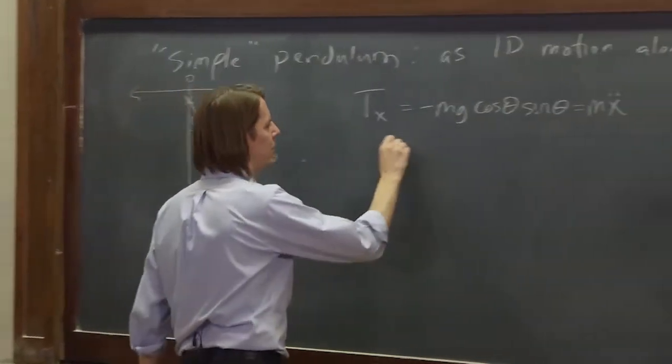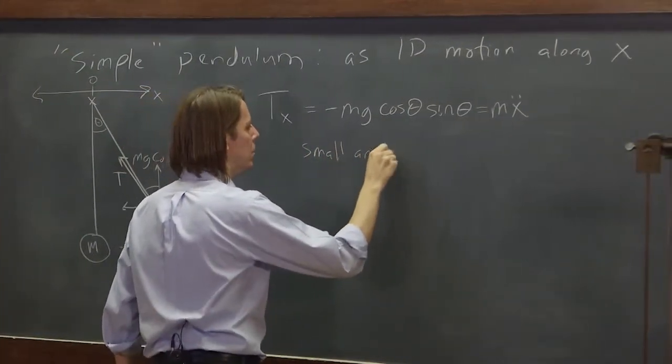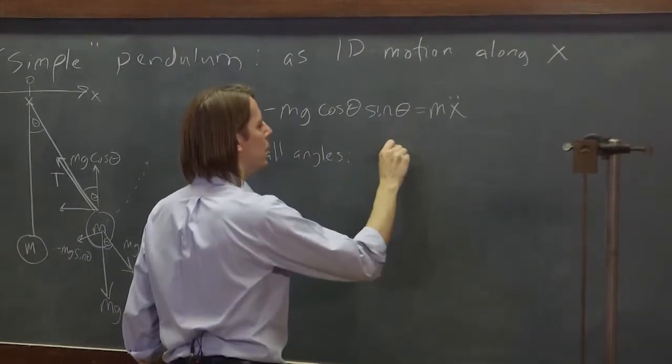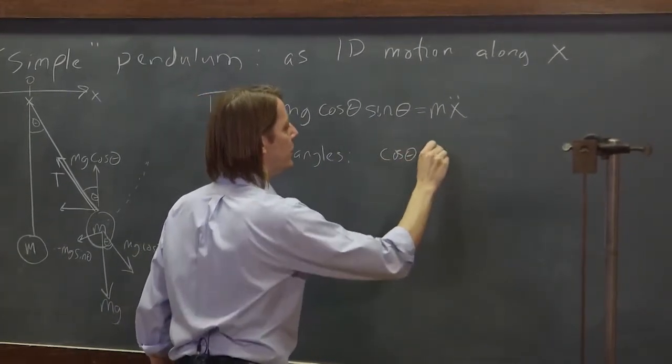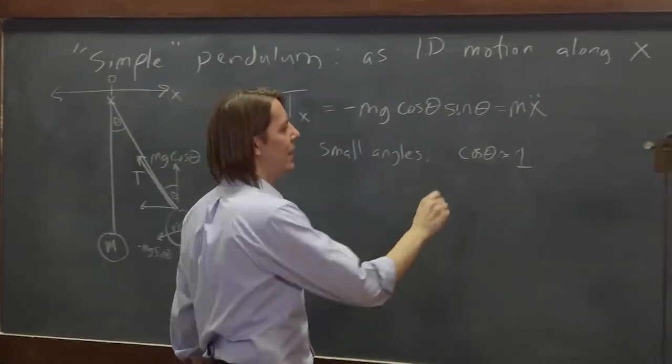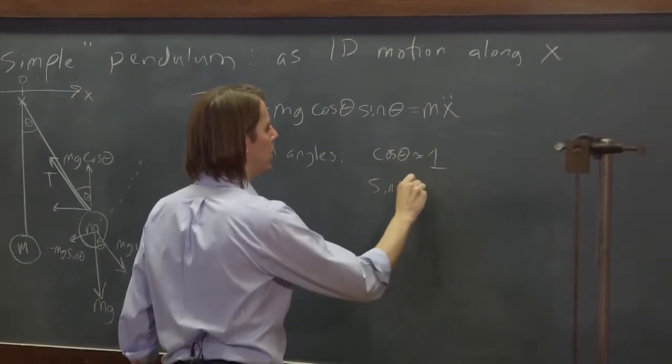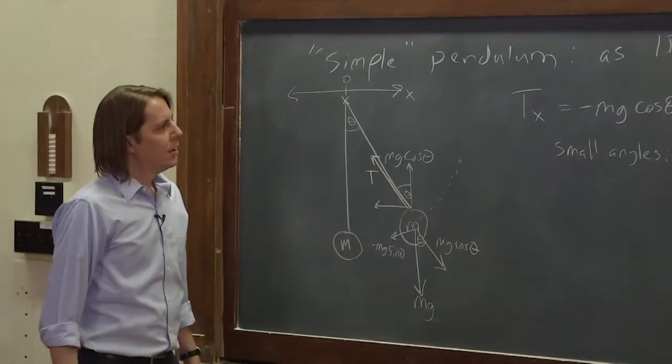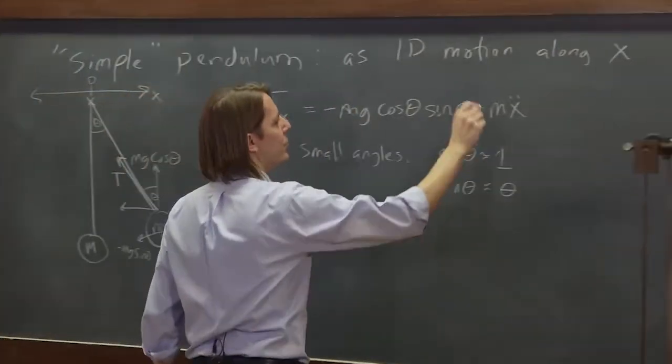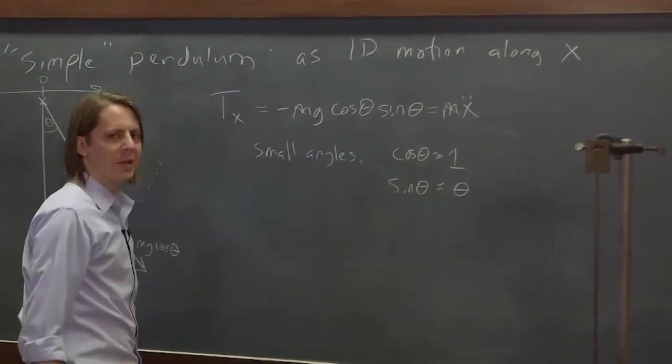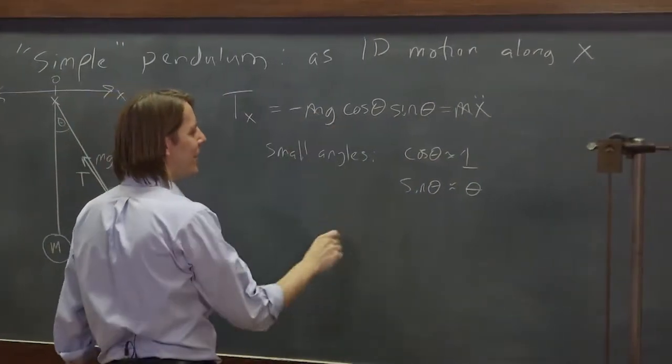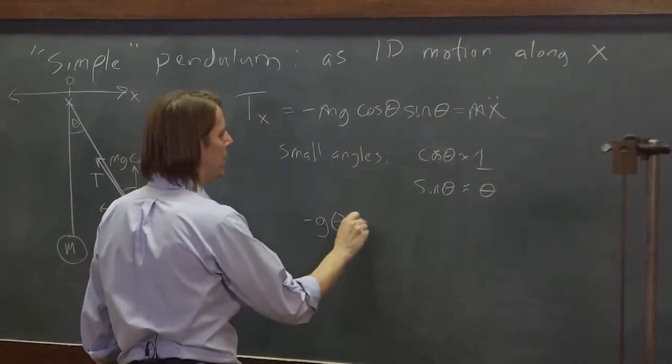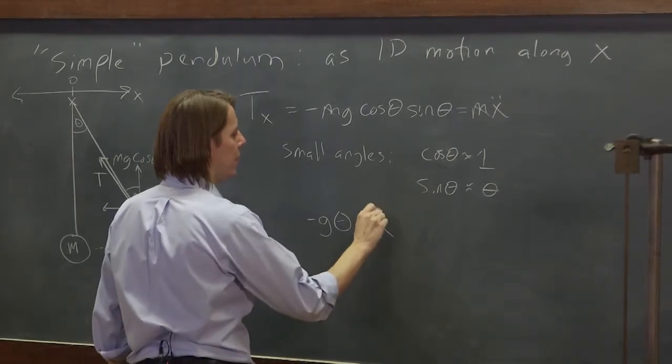And then we make all those approximations everybody else makes. Small angles, cosine theta is about 1, so you ignore the cosine theta. And sine theta is about theta. And we can cancel the masses, of course. And we're zooming in here on the same answer everybody else gets, which is minus g theta equals x double dot.